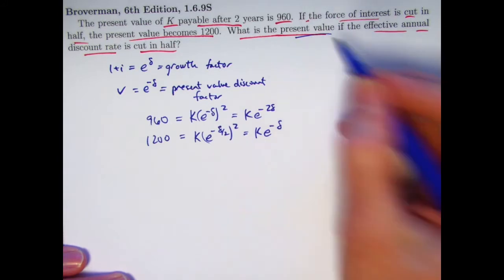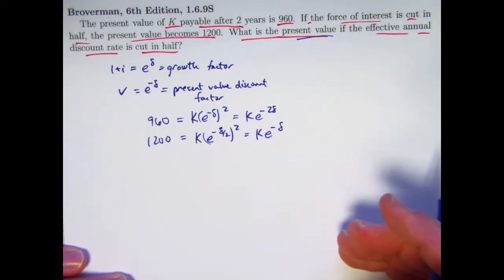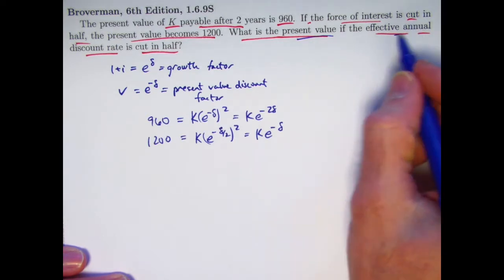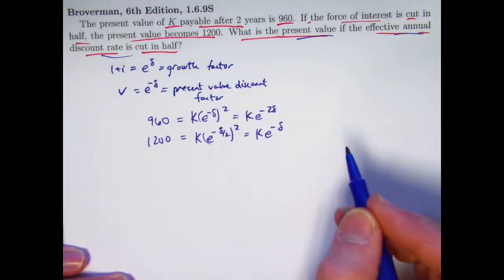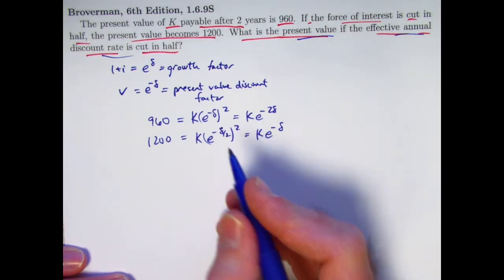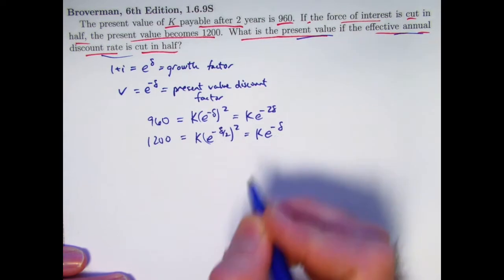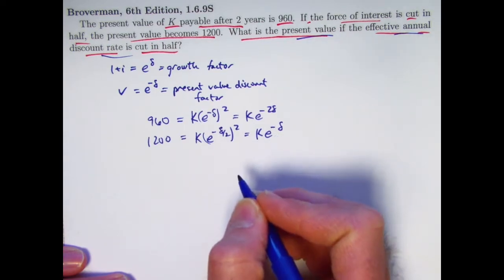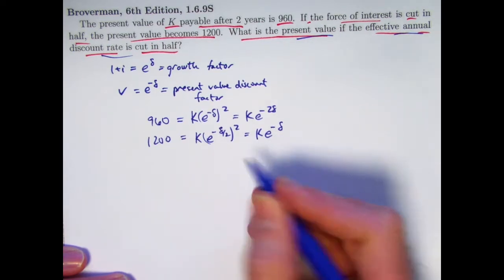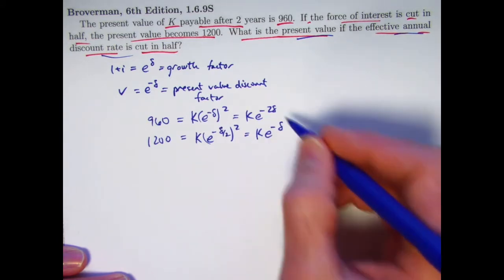If we're going to find the present value of K that's going to be, again, payable two years from now based on cutting the annual discount factor in half, I think we better find K. And I think we better find the current discount factor. Let's see. Can we solve this system maybe for, first of all, for e to the negative delta, which is going to be the same as V, which is related to this discount factor? Yes, you can divide, say, the top equation by the bottom one.